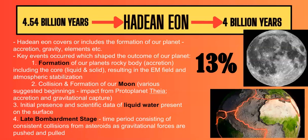So the core, the atmosphere, the magnetic field, the EM field all came into place, along with the Moon and the asteroid bombardment. This stage is really important for setting the foundations for what our planet became later on in its history.